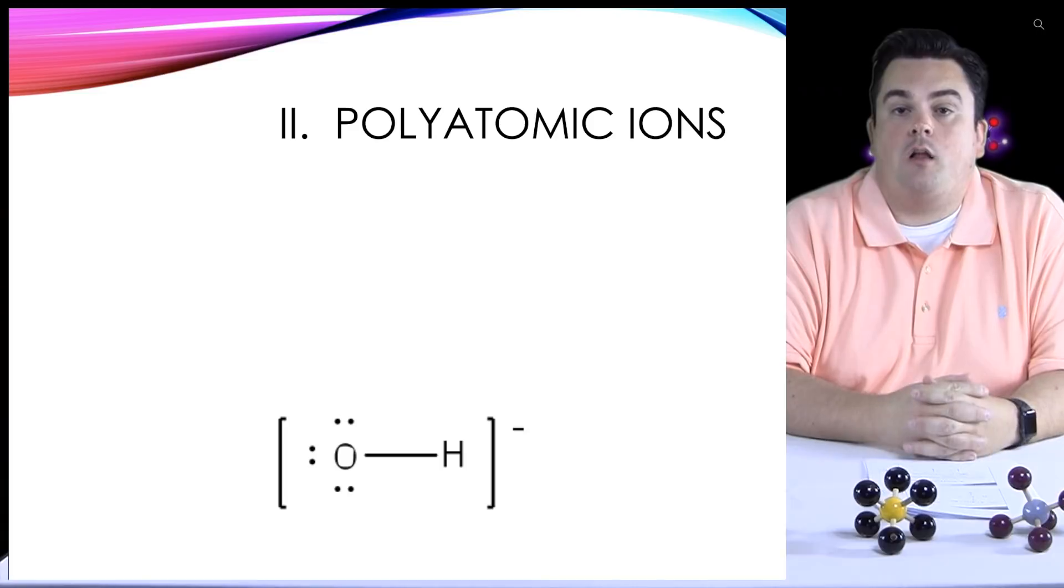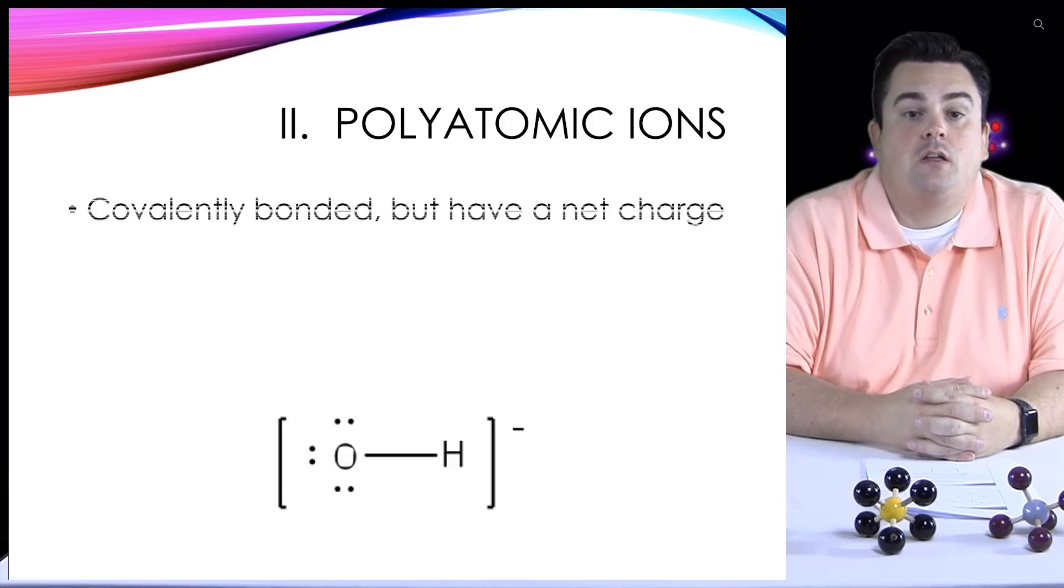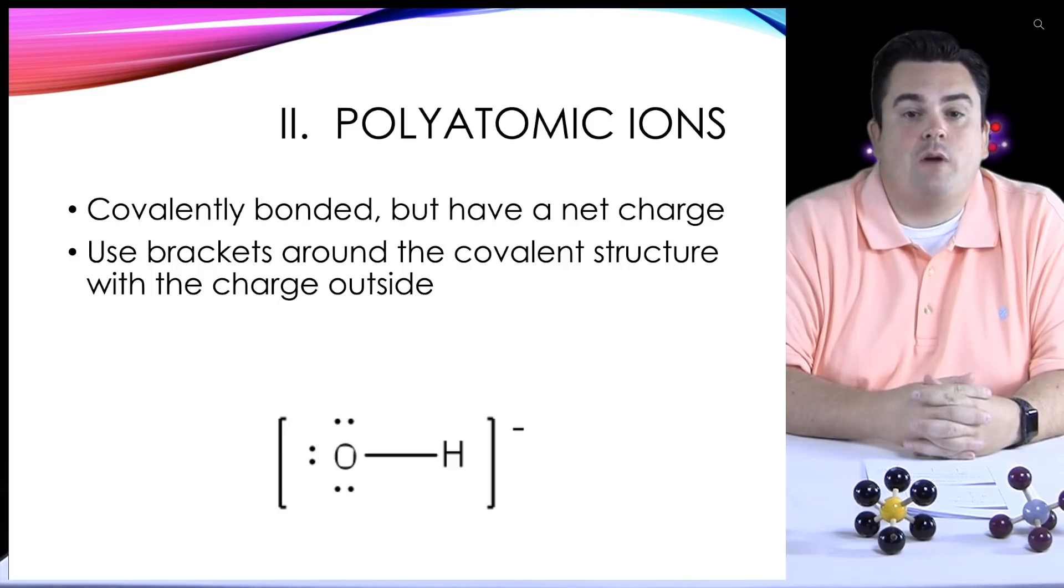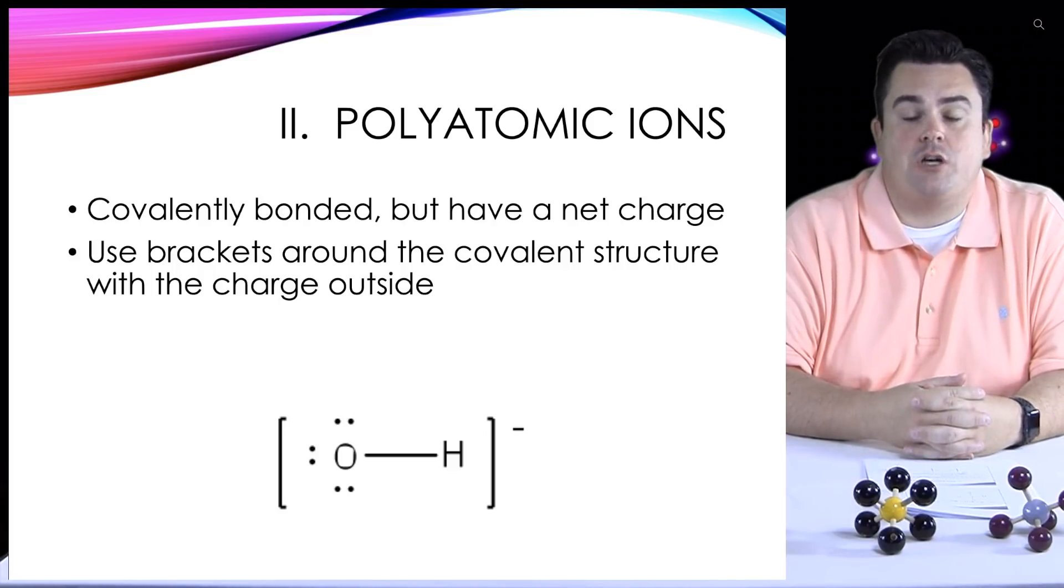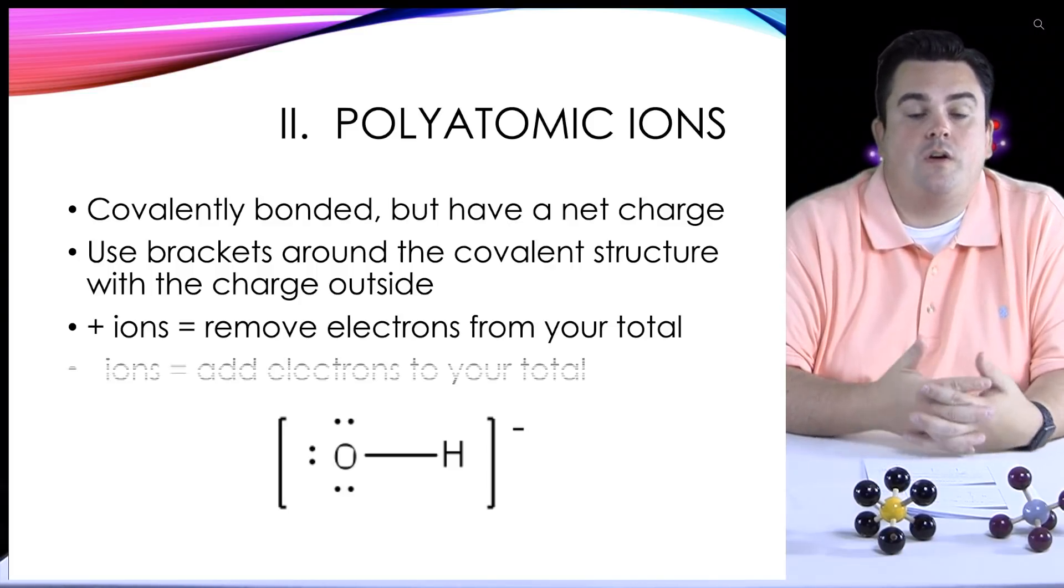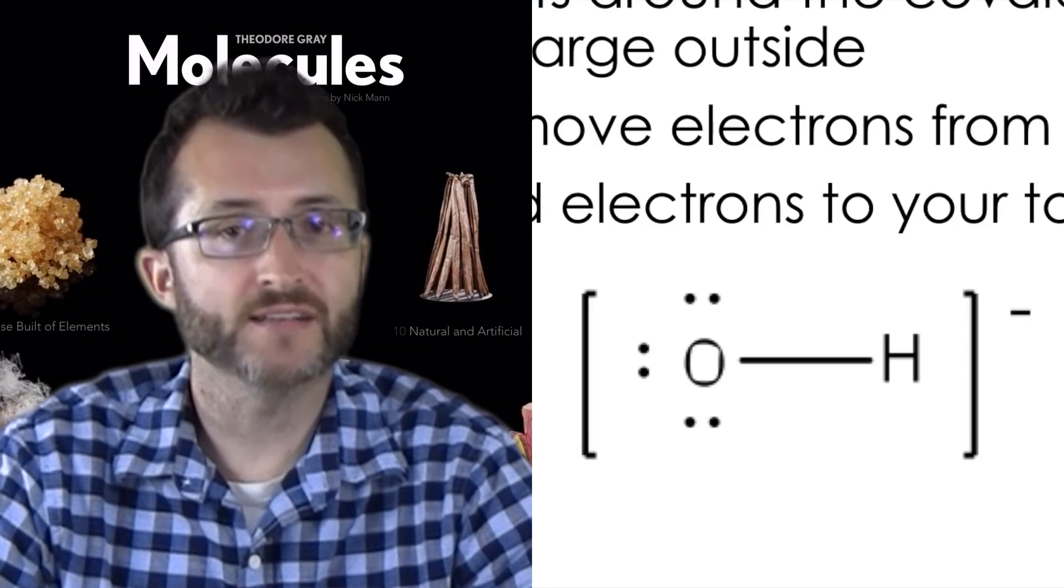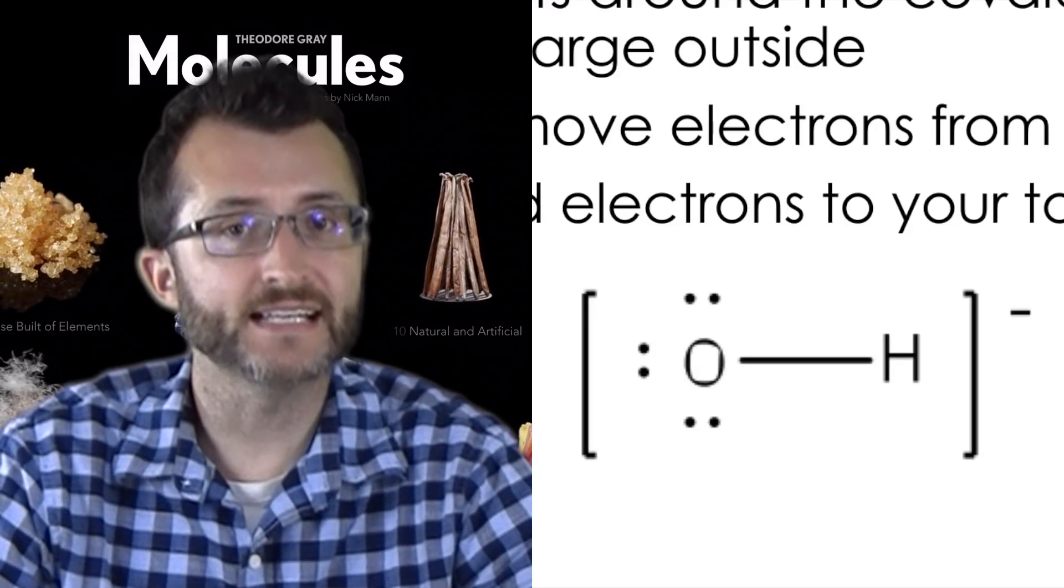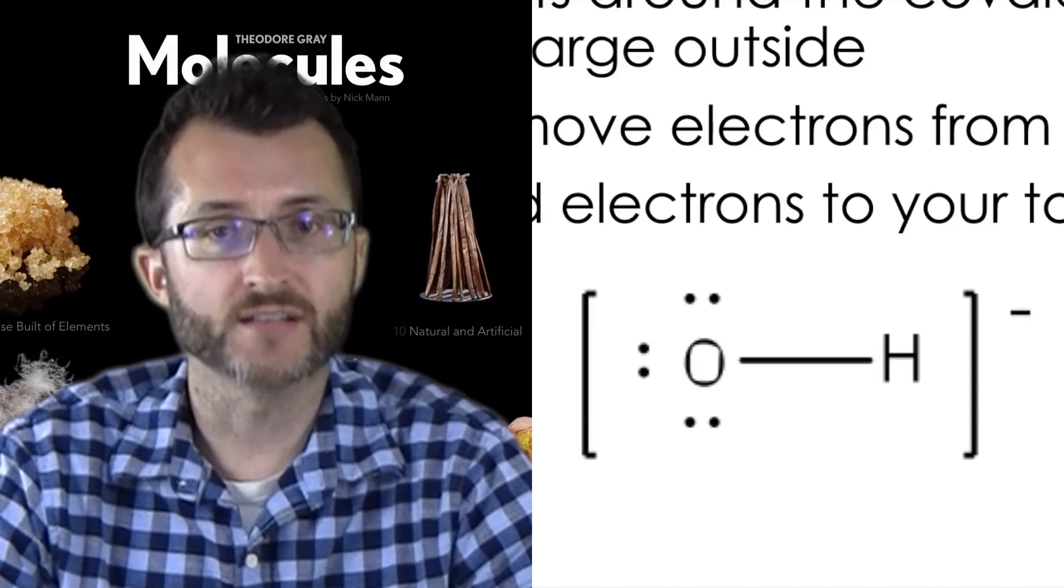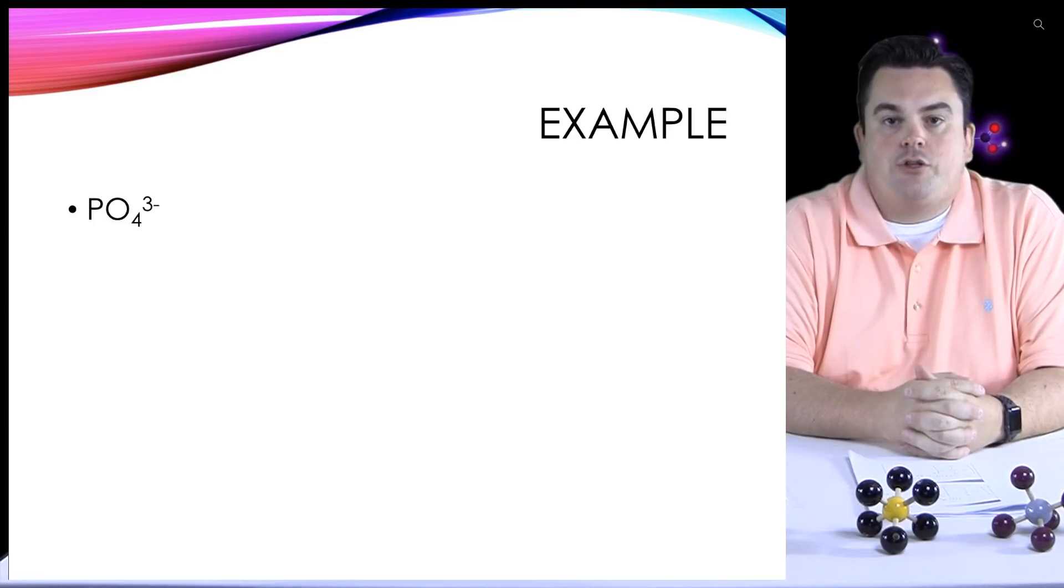Polyatomic ions. If you recall, poly means many, atomic means atom. So, these are many atoms that make up our ions. They're covalently bonded and have a net charge. Use brackets around the covalent structure with the charge outside. Positive ions remove electrons from your total. For negative ions, you'll add electrons to your total. If we take a look at the picture, we have OH minus, which is hydroxide ion. You can see that it has a negative charge. This means that we've gained an electron, so we should add an electron to our total.